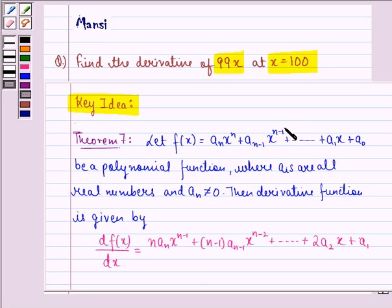x raised to the power n minus 1 and so on till a_1 x plus a_0, be a polynomial function where a_i's are all real numbers and a_n is not equal to 0. Then the derivative function is given by df(x)